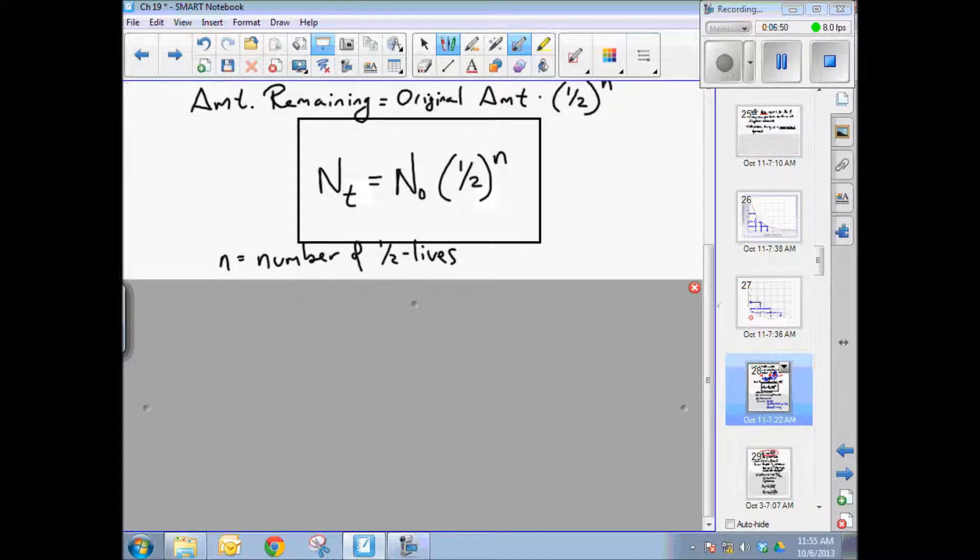N up here in the top right corner is the number of half-lives. There's the exponent. And in this case, n is nice round numbers, one, two, three, four half-lives, et cetera.